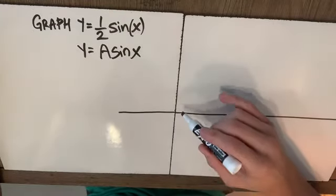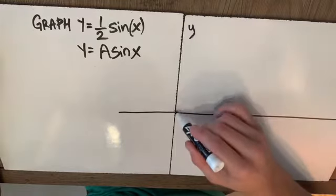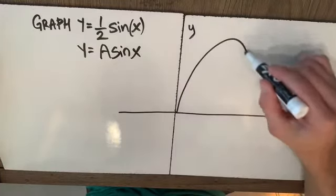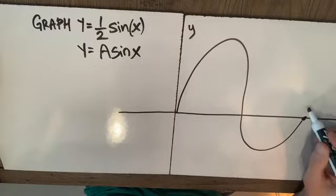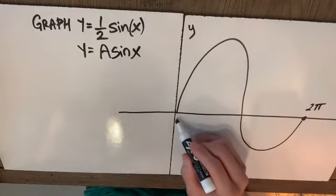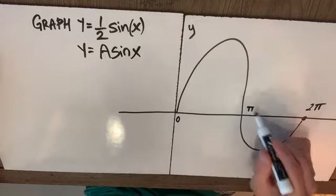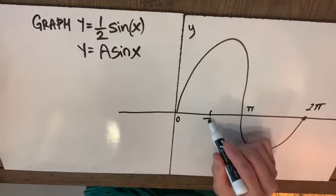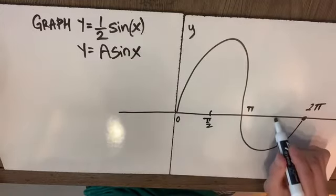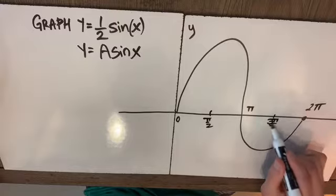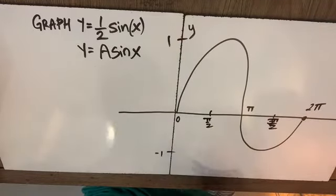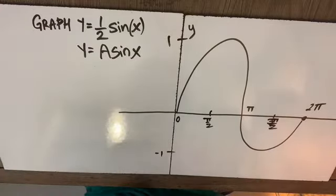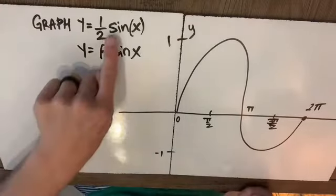Well the parent function if this is our y axis goes 0 max 0 min 0 and it ends here at 2π for reasons we talked about. So halfway would be π and this is π/2 and halfway between these is 3π/2. So there's my parent function. It goes up to 1 and down to negative 1 because we started this whole thing with the unit circle.